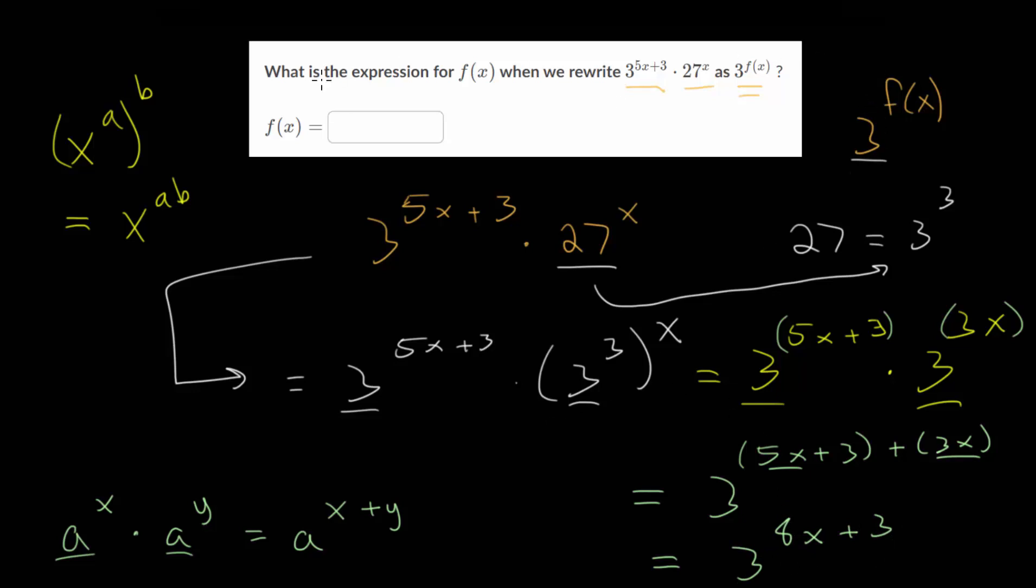So, we needed to rewrite this expression as 3 to the f of x, or 3 raised to this function, f of x. And, since we were able to simplify this to 3 to the 8x plus 3, this right here, this is our missing function. So, we can conclude that f of x, in our problem, is really just 8x plus 3.